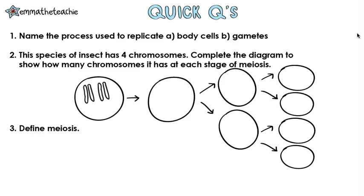Time to test what you've learned. Press pause, give the questions a go, and press play when you're ready. Number one: name the process used to replicate a) body cells and b) gametes. Body cells use mitosis and gametes use meiosis.